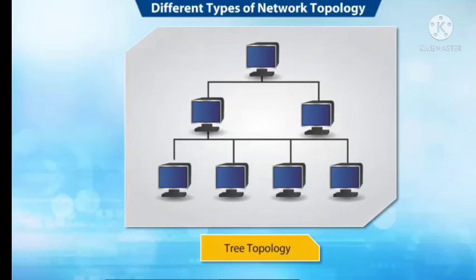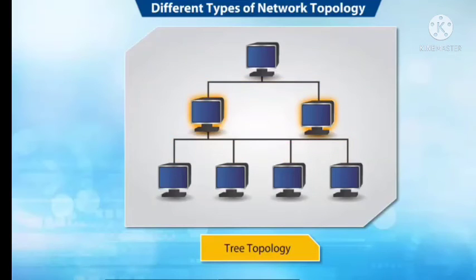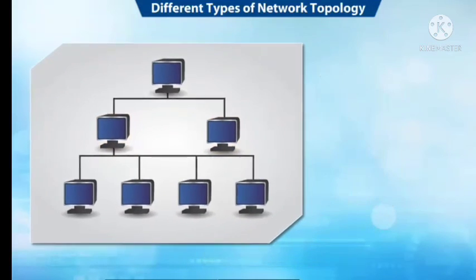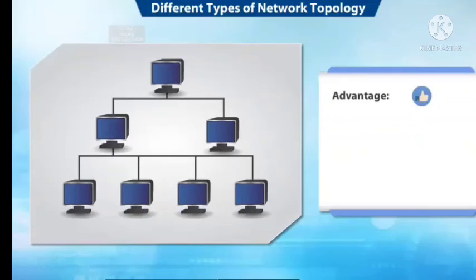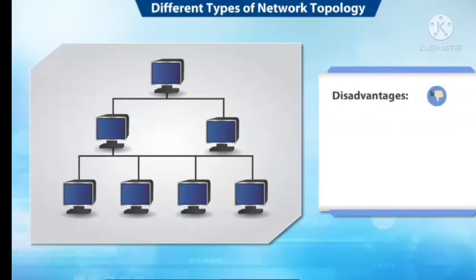Tree topology is also known as star-bus topology because it has elements of both bus topology and star topology. Each hub is like the root of a tree. In tree topology, the central nodes of two star networks are connected to one another. The advantage of tree topology is that it is flexible for expansion. The disadvantage is that it is difficult to configure and is more expensive.